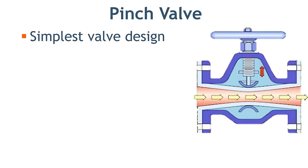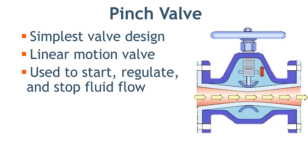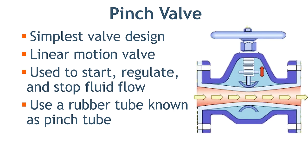The pinch valve, also known as a clamp valve, is a linear motion valve used to start, regulate, and stop fluid flow. It uses a rubber tube, also known as a pinch tube, and a pinch mechanism to control the fluid. Pinch valve is ideally suited for handling slurries, liquids with a large amount of suspended solids, and systems that convey solid material pneumatically.